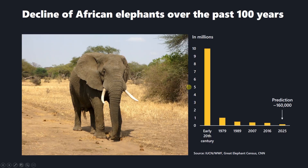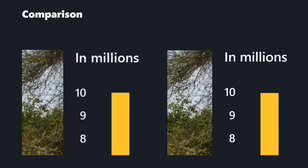Let's take a look at the other example. We have a photo here, a chart and some text. What will happen if we save this slide as an enhanced metafile and a JPEG, another pixel-based format? Look, the first one is a JPEG image and the other one is an enhanced metafile. Again, you can see the difference in the quality. However, in this case, the EMF is much heavier than the JPEG.